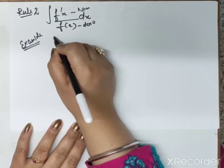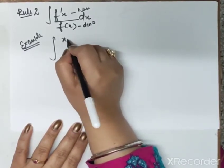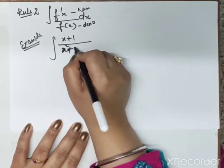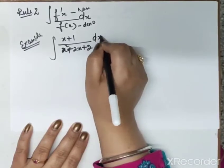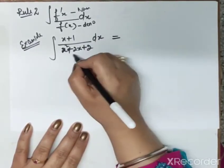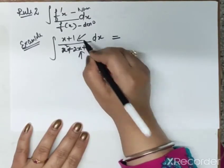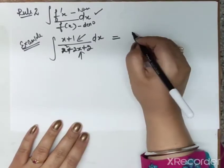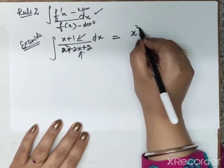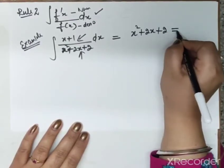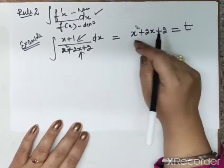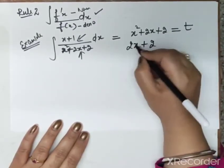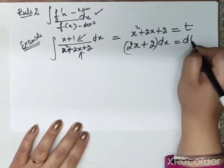The example is: integrate (x+1) / (x² + 2x + 2) dx. Here the main function is x² + 2x + 2 and its derivative is (x+1). The first step: let x² + 2x + 2 = t. Next step, take its derivative: 2x + 2 dx = dt.